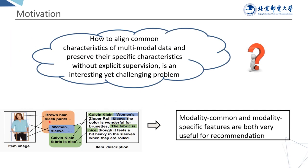We take an example in the picture. Modality common features include women and sleeve. Visual modality specific features include brown hair and black pants. Textual modality specific features include Calvin Klein and fabric is nice. Both modality common and modality specific features are very useful for recommendation. Based on this background, our work's motivation is how to align common characteristics of multi-modal data and preserve their specific characteristics without explicit supervision.